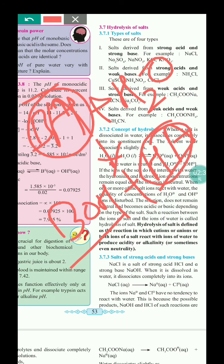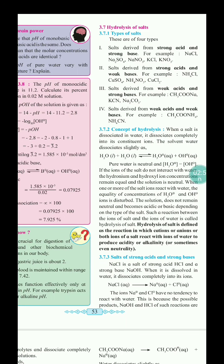Depending upon the type of salt, it is converted: if it is a strong acid, into H⁺ and A⁻; if it is a strong base, into B⁺ and OH⁻. So finally, hydrolysis of salt is a reaction in which anion or cation or both the ions of salt react with ions of water to produce acidity, alkalinity, or neutrality in the solution.